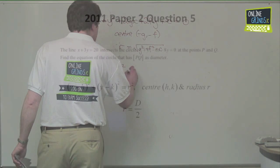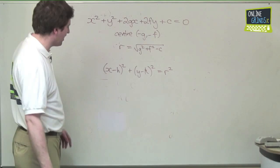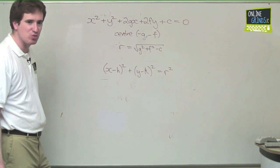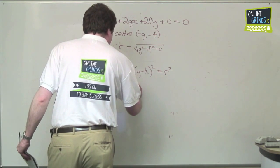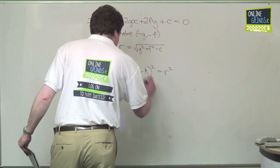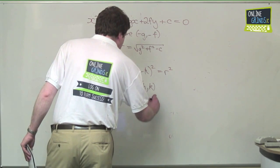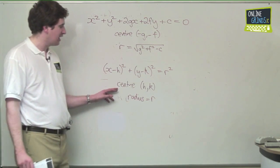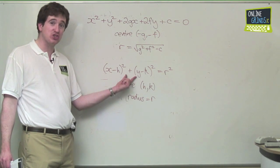x minus h all squared plus y minus k all squared is equal to the radius squared. The centre is h k and the best thing about this form of the equation is that the radius is just equal to r. So if you can find the centre and find the radius quickly in any problem, this is almost certainly the easier equation to use.